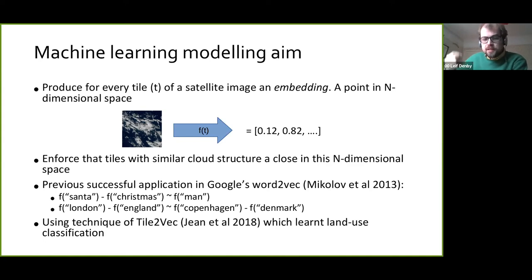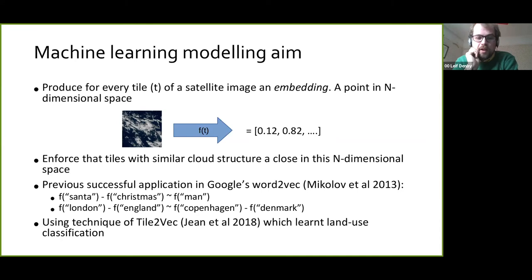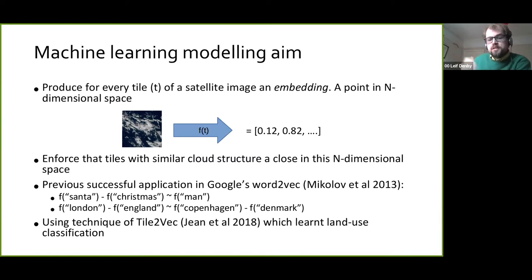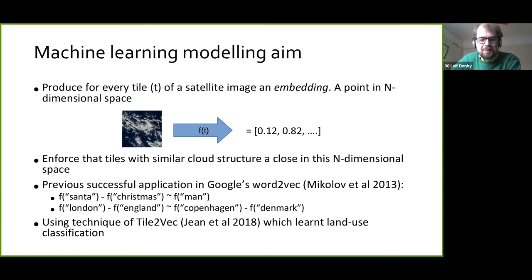The machine learning algorithm learns to take individual words and map them into a high-dimensional space, and just from how it's fed word pairs — their uses in the English language — it actually builds up relationships between words purely on its own. For example, it could learn what happens when you subtract 'Christmas' from 'Santa', or that the vector from London to England is similar to the vector from Copenhagen to Denmark. The neural network learns something about the relationship between a capital city and its country.